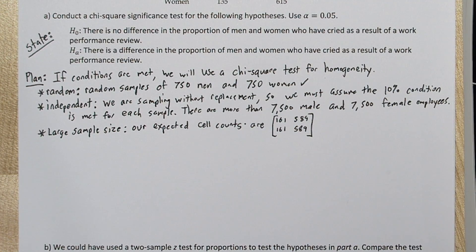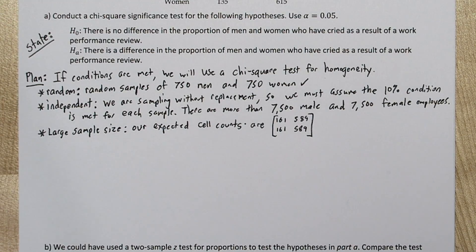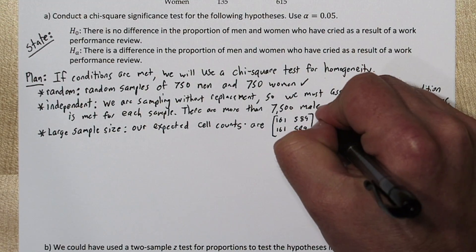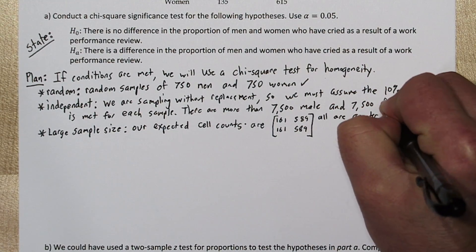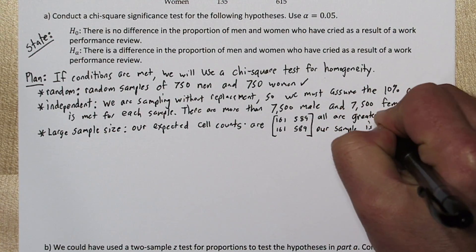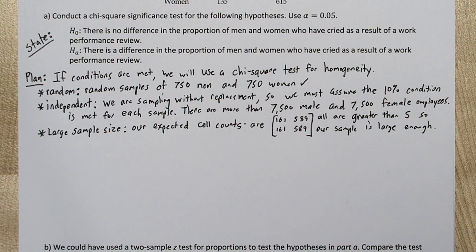Now this is because we're assuming the null hypothesis is true to determine our expected cell counts. So if there is no difference in the proportion of men and women who have cried as a result of a work performance review, and if the sample sizes are the same for the men and women samples, we'd expect these to be the same numbers. But the good news is they're all greater than 5, so our samples large enough.